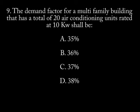Number 9. The demand factor for a multi-family building that has a total of 20 air conditioning units rated at 10 kilowatts shall be: A. 35%, B. 36%, C. 37%, D. 38%.